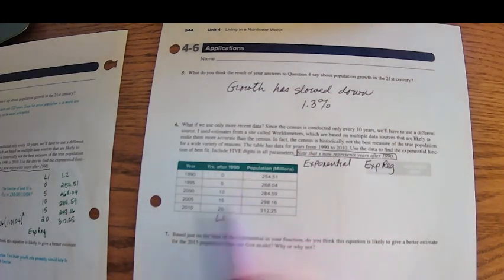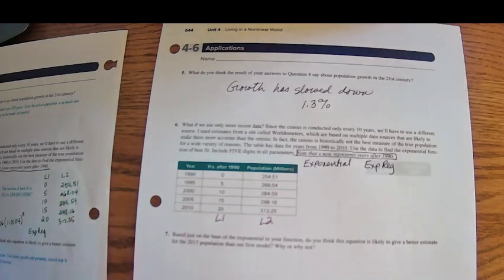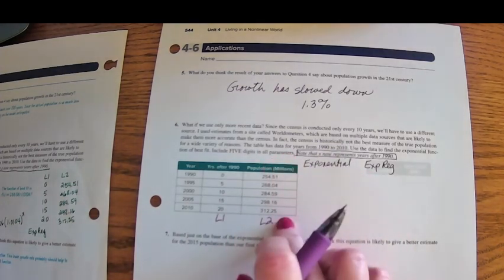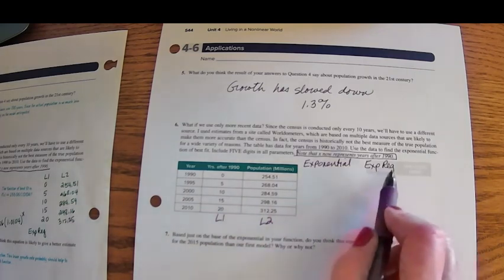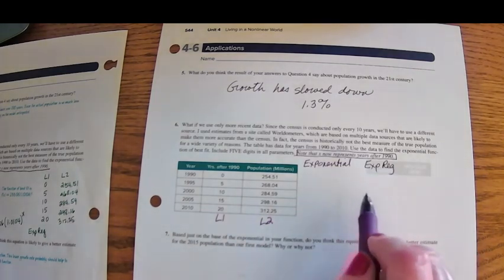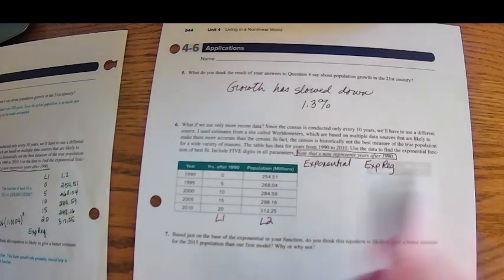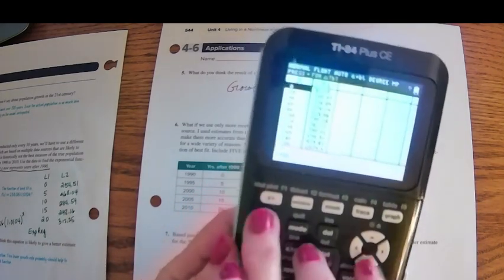And so here we have the table in the data for years 1990 to 2010. Use this data to find the exponential function, five digits in all parameters. And it says, note, X now represents years since 1990, not 1900. So we're going to put 0, 5, 10, 15, and 20 in the list L1. And we're going to put our population in list L2.